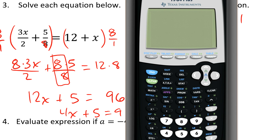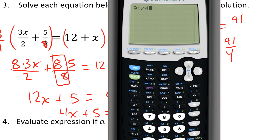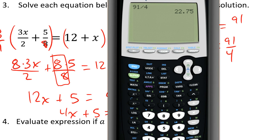So my answer I claim is 91 over 4. So I'll just do 91 divided by 4. And this is my answer. You can see it's 22.75.